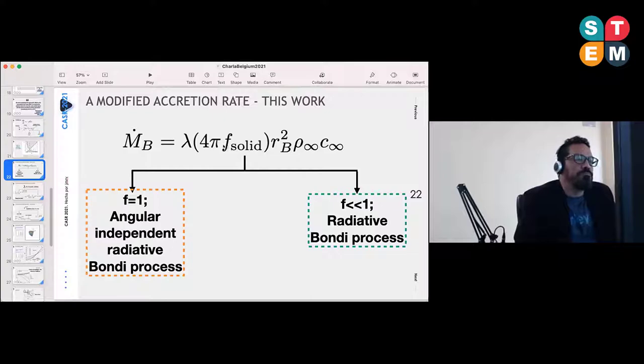One element we added was this f here to the Bondi accretion rate. If the solid angle covered by the flow is exactly equal to one, which means everything, so there's no angular dependence, you recover exactly the pure gravity accretion rate quantity. On the other hand, we estimate that when angular radiative processes are involved in the calculations, then this f is going to be very, very small in general.